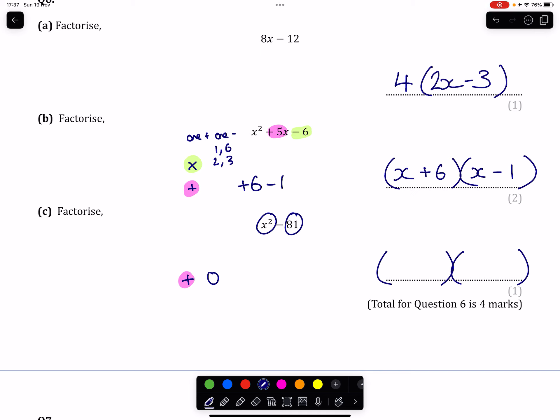And both of these terms that I've circled have a nice square root. The square root of x squared is x, meaning x times x is where that comes from. The square root of 81 is 9, meaning 9 times 9 is where the 81 comes from.